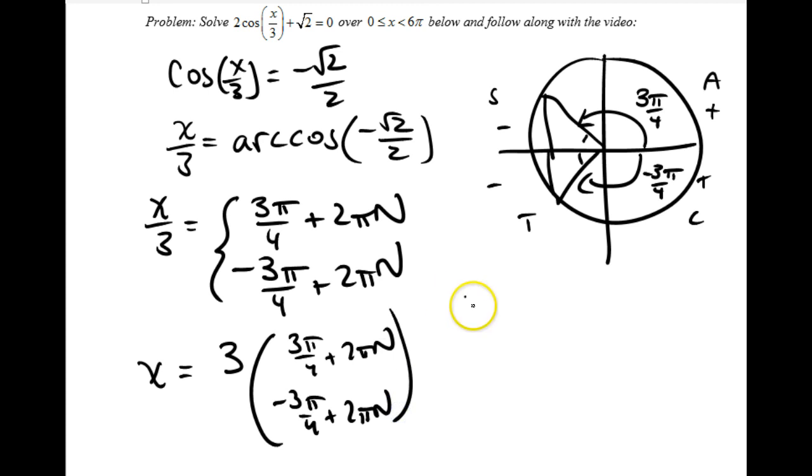And I end up with x equals 9 pi over 4 plus 6 pi n or negative 9 pi over 4 plus 6 pi n. That's kind of ugly and it's kind of weird to think about but it's no big deal because really all I want are the answers between 0 and 6 pi. I'll just start listing them.